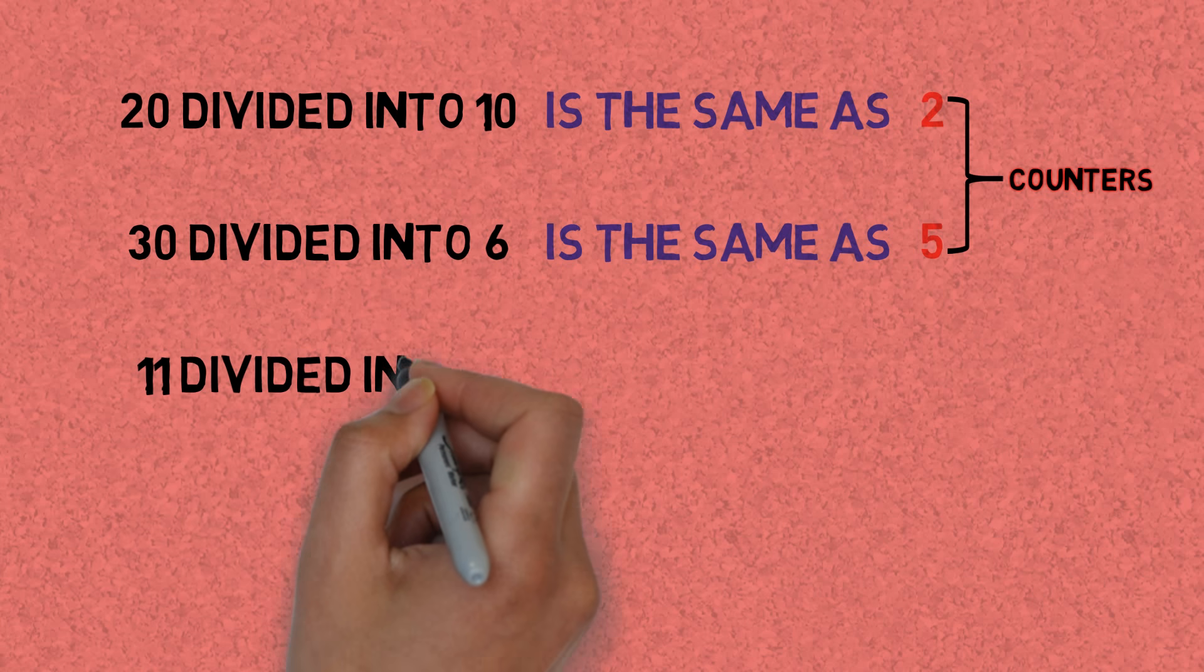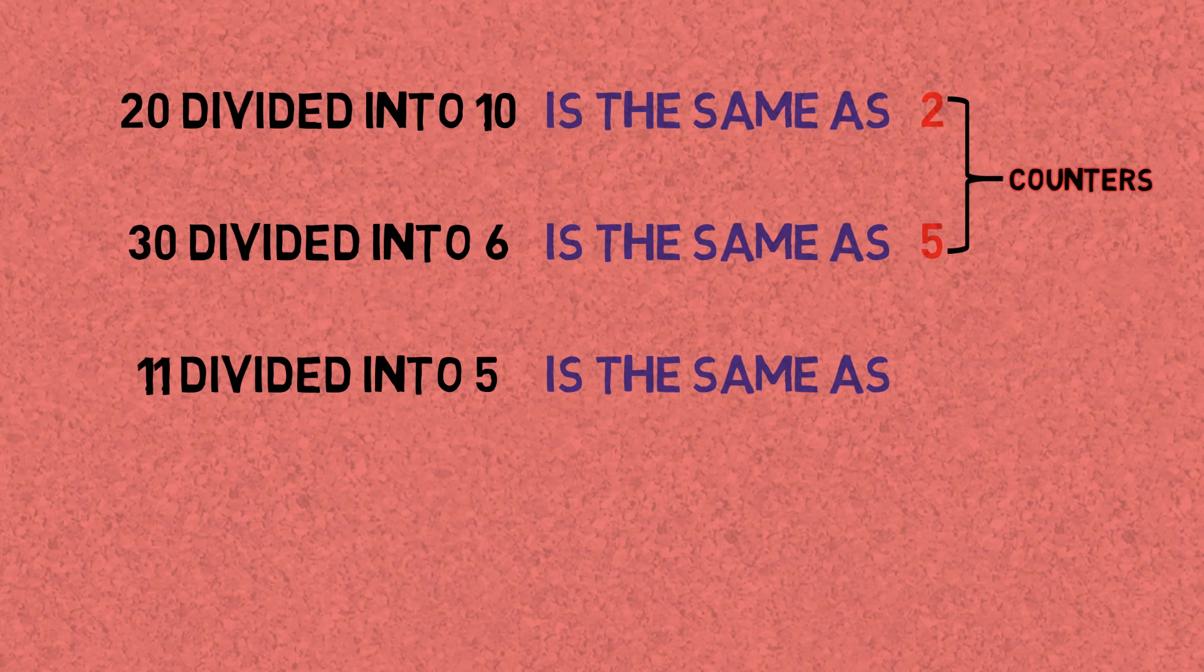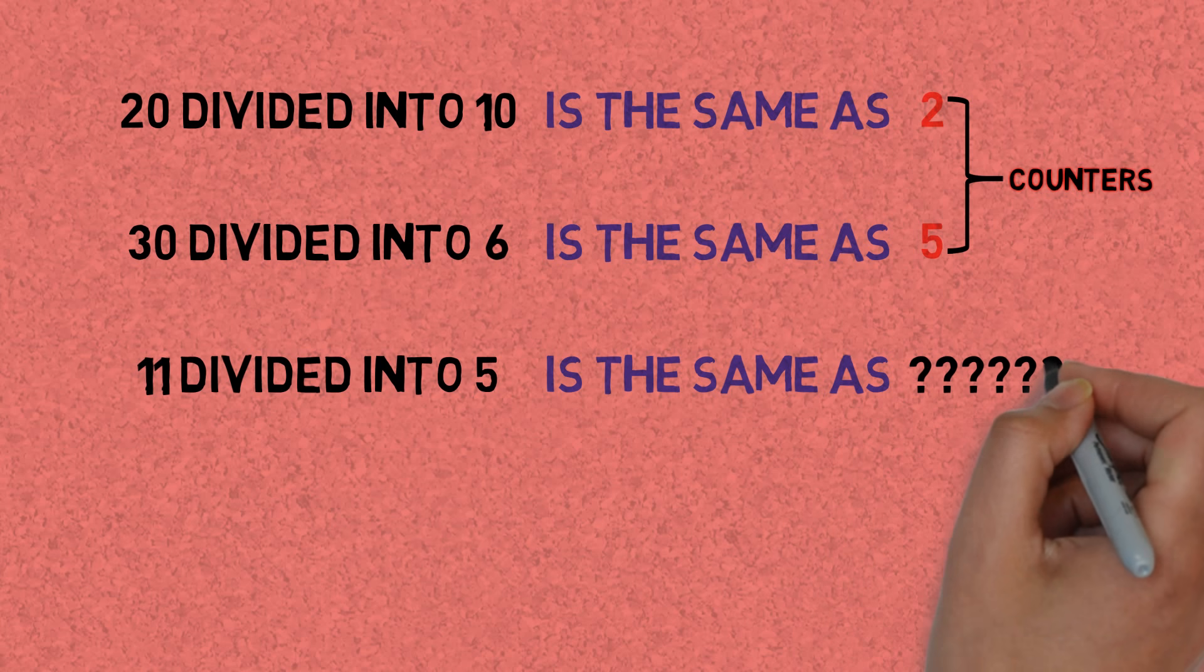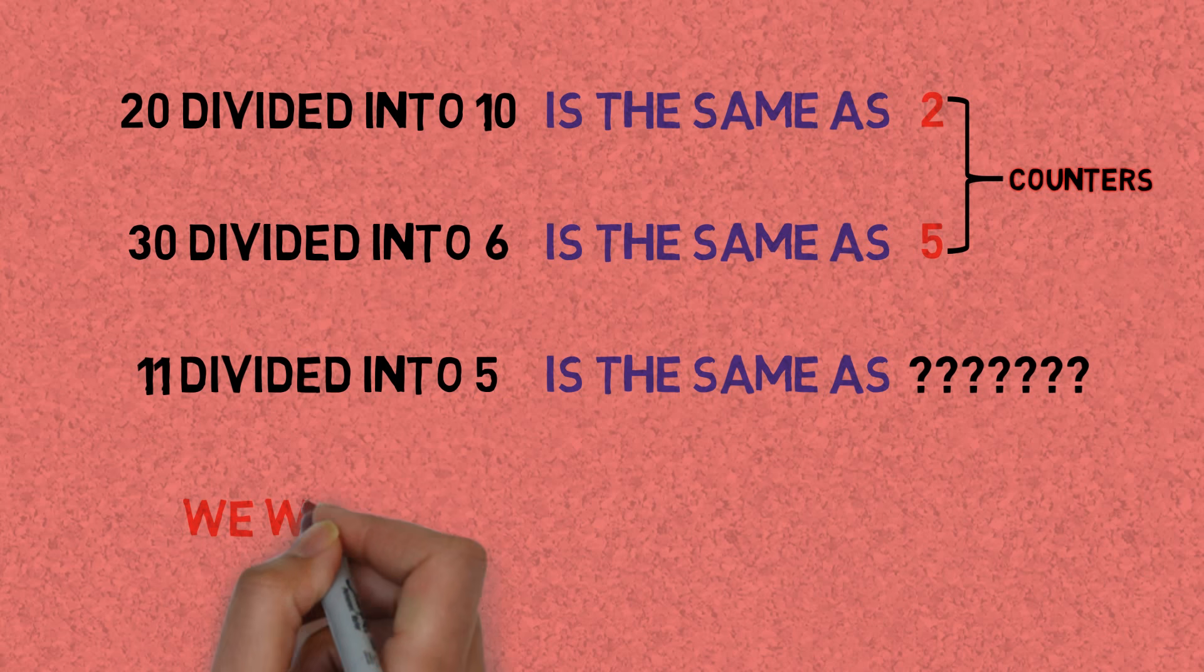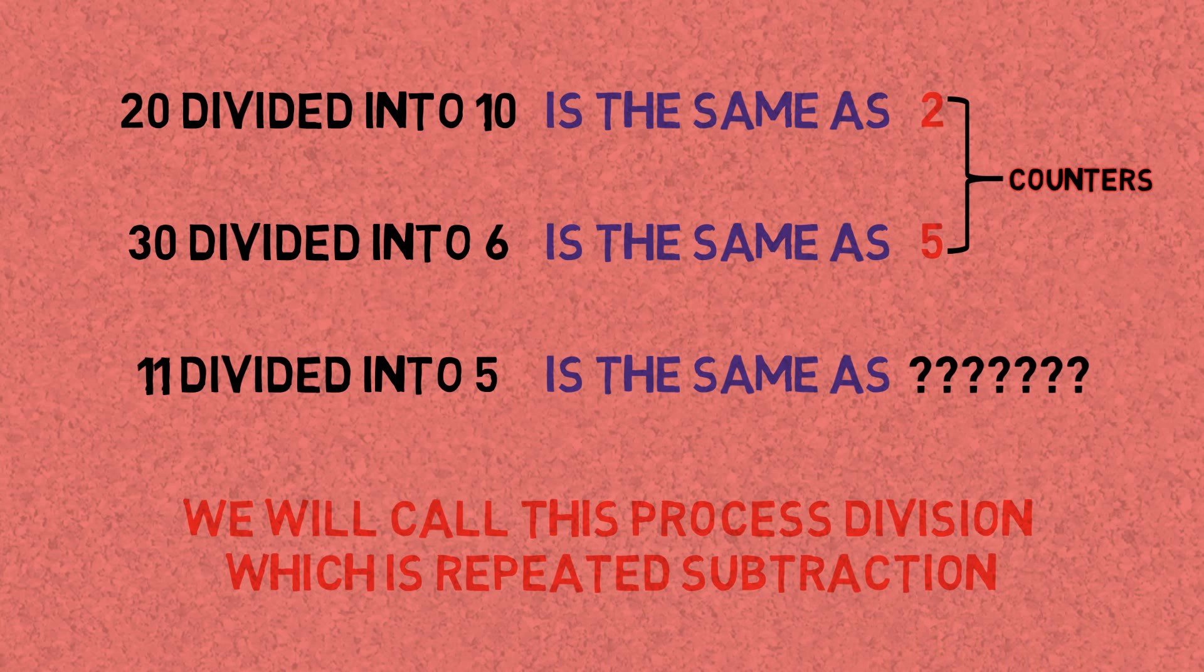Another example: 11 divided into 5 is not known at the moment. We will find a way later. So we will call this process division, which is repeated subtraction.